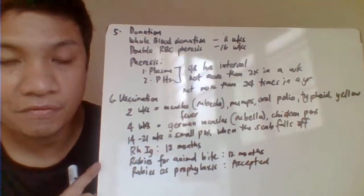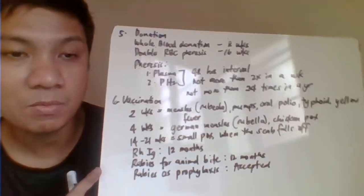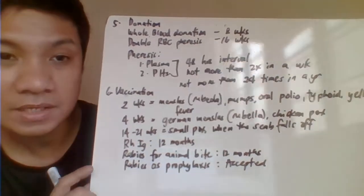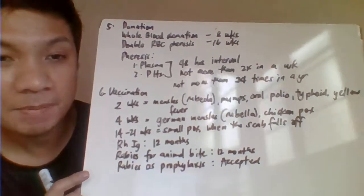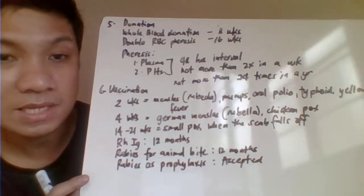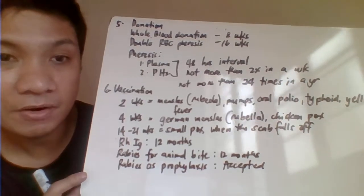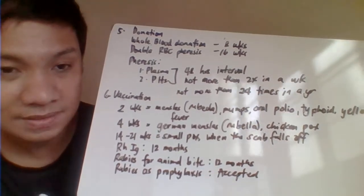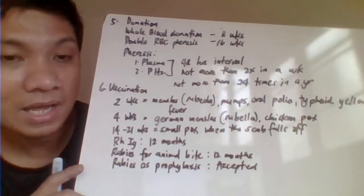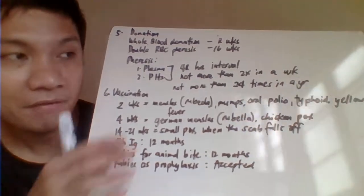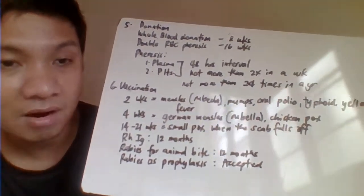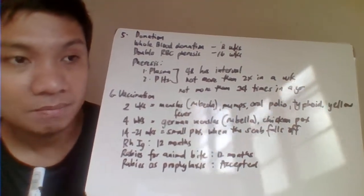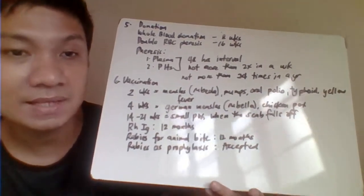For donation intervals: whole blood donation requires 8 weeks between donations. Double RBC apheresis requires 16 weeks. For apheresis programs, the interval is 48 hours, provided it is not more than twice a week or more than 24 times a year. From apheresis to apheresis is 48 hours, from apheresis to whole blood is 48 hours, but from whole blood to apheresis is 8 weeks.